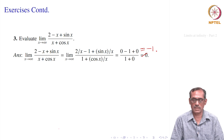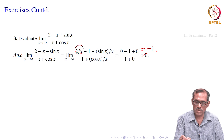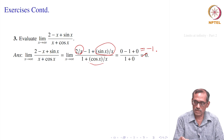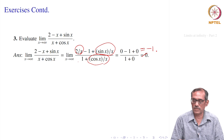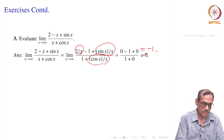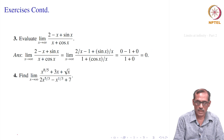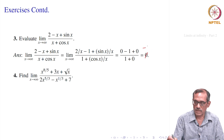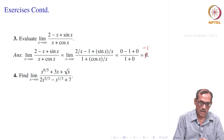That is what our initial guess was. Since 2/x goes to 0, sin(x)/x goes to 0, and cos(x)/x goes to 0, all that remains is minus 1 over 1, and the limit is minus 1.